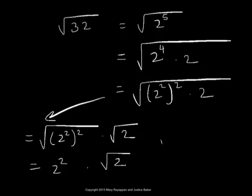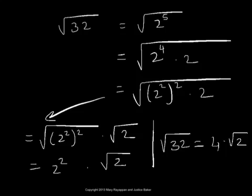So root 32 will be 2 squared, which is 4 times square root of 2. That is the simplified version of radical 32. I hope this helps. Thank you.